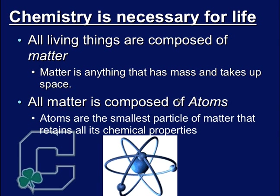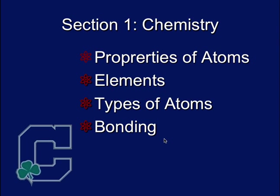Now, all of that matter is then composed of atoms. Atoms are beyond microscopic. You have to have a special microscope known as an electron microscope in order to be able to even see the outlines and the shapes of atoms. So they're very, very small. In fact, they're the smallest particle of matter that retains all the chemical properties of matter. Now, these are the four sections we're going to cover here: Properties of atoms, elements, types of atoms, and bonding.